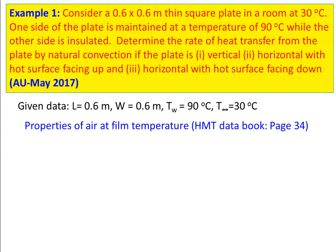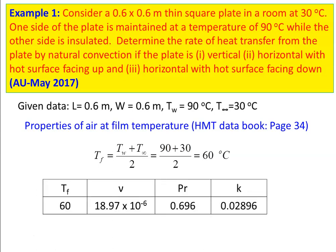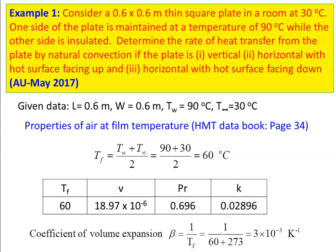Properties of air from the heat and mass transfer data book at film temperature: Tf = (90 + 30)/2 = 60°C. Kinematic viscosity ν = 18.97×10⁻⁶, Prandtl number = 0.696, thermal conductivity k = 0.02896. The coefficient of volume expansion β = 1/Tf = 1/(60 + 273) = 3×10⁻³ K⁻¹.